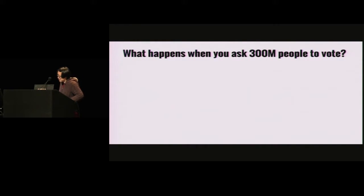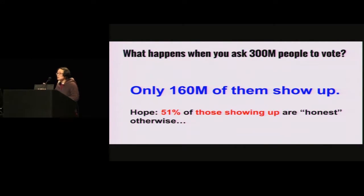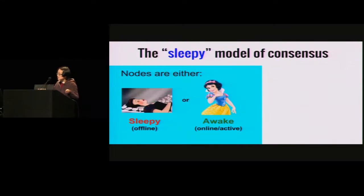I'm going to make an analogy. We just had our presidential election. What happens when you ask 300 million people to vote? Only 160 million of them will show up. We can hope that perhaps among the people who actually do show up, maybe 51% of them are honest — because otherwise we cannot really predict the outcome of the election. We can think of consensus in very much the same way. I'm going to call this the sleepy model of consensus. The nodes are either sleeping, meaning they're offline, or they're awake, meaning they're online and actively participating in the protocol.